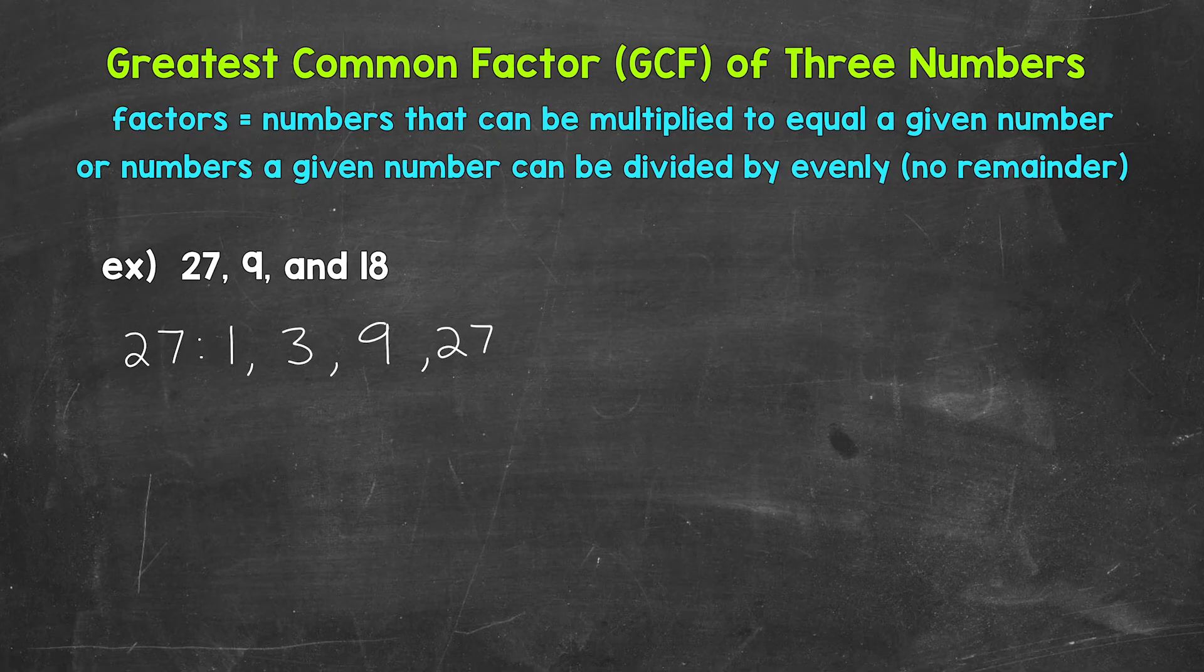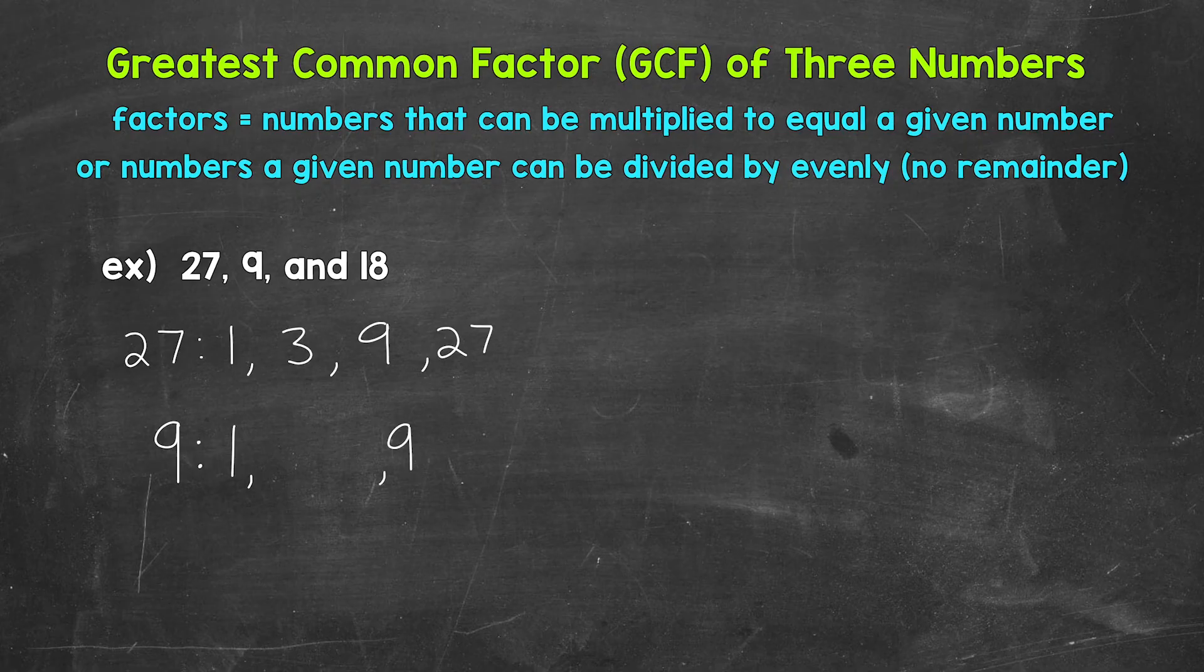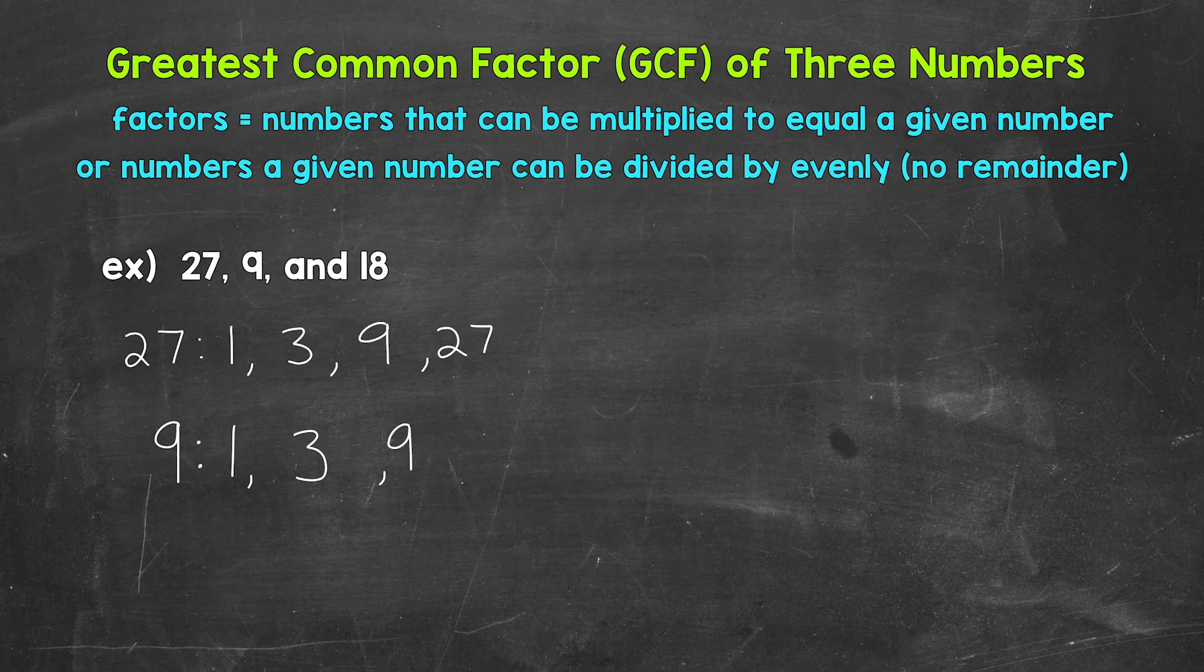Let's move on to the factors of 9. And we can start with 1 and 9. Now we need to think of other factors of 9. Well, 3 times 3 equals 9. So 3 is a factor of 9. And although 3 times 3 equals 9, we just need to put 3 once there as far as the list of factors.